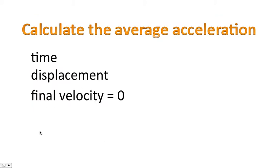To do this, you're going to need three variables. From the videos you'll be watching today, you'll be recording time. In addition, you'll be recording displacement, or the distance the car has traveled. For all the videos you're going to watch today, the final velocity is zero.